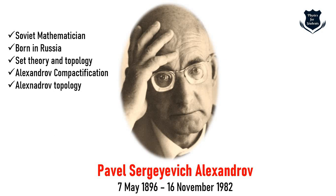Alexandrov made his first major mathematical success in 1915 in set theory. He worked with Felix Hausdorff and developed what we call today point-set topology or general topology. In 1920 he developed combinatorial topology. He was president of the Moscow Mathematical Society, vice president of the International Congress of Mathematicians, and full member of the Soviet Academy of Sciences from 1953.